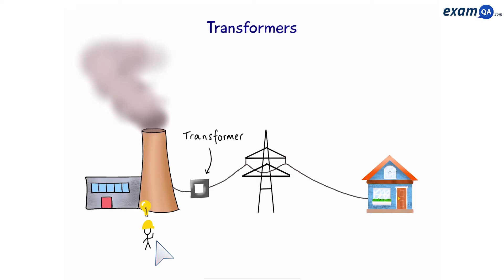They would place this device called a transformer in the power station. This is a step-up transformer. It will increase the voltage and thereby reduce the current. For example, the voltage of the electricity in the power station is 10,000 volts. The transformer will increase this to 400,000 volts. Now it will make its way to our homes.